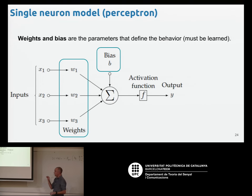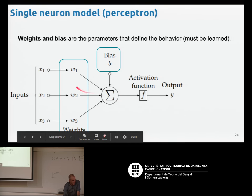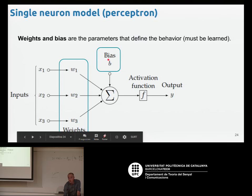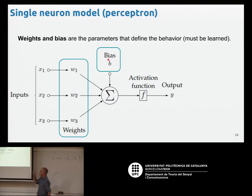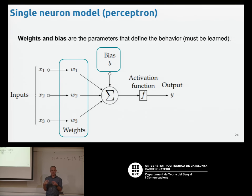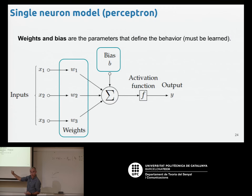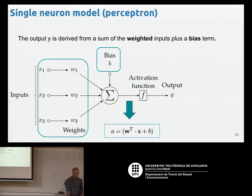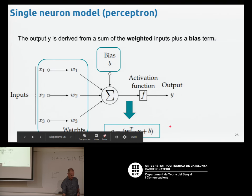Looking at the Perceptron architecture in detail: this model has the following parameters called weights — in this case there are three weights, one for each input, and then there's a bias. If we know these parameters, we fully characterize the Perceptron. When we say we want to train the Perceptron — remember the earlier graph about training and inference — during training we are actually estimating these parameters: the weights and the bias. At this point we have a weighted sum plus bias.